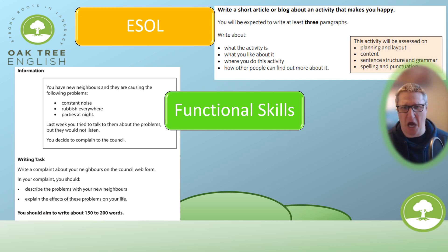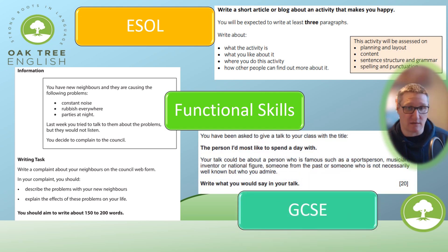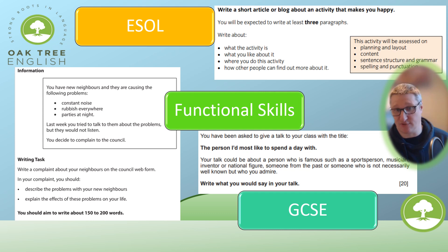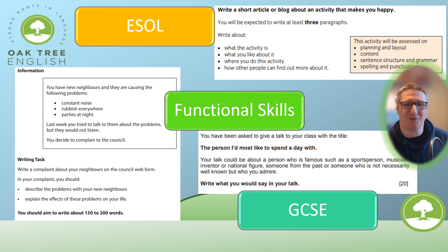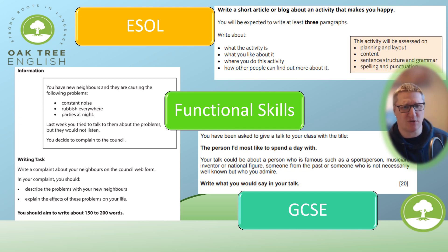For GCSE, let's see what one of their topics looks like. It's not very dissimilar: 'Give a talk to your class with the title: The person I'd most like to spend a day with.' Your talk could be about someone famous — such as a sports person, musician, inventor, or national figure — someone from the past, or someone who's not necessarily well known but who you admire. Then write what you would say in your talk.